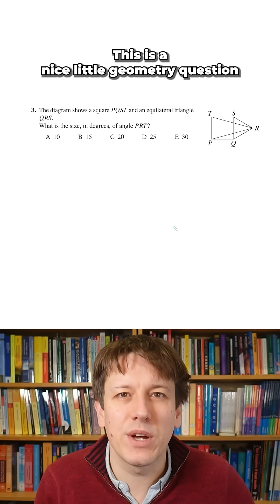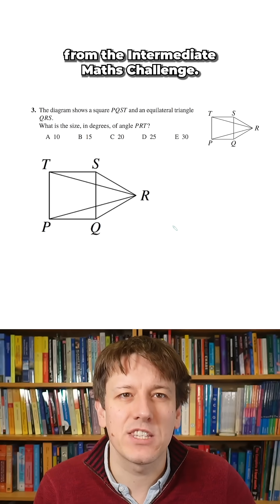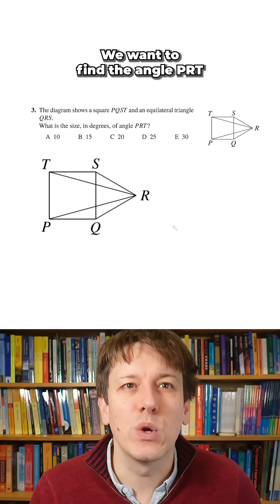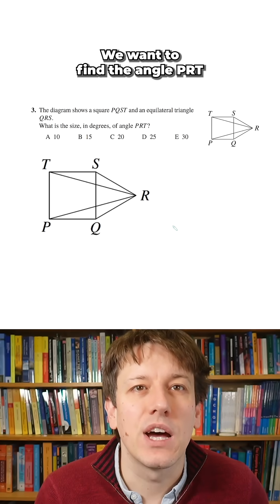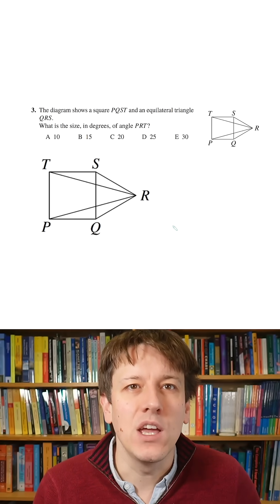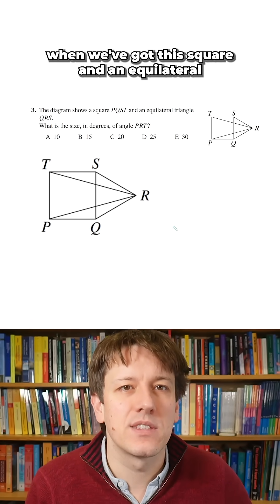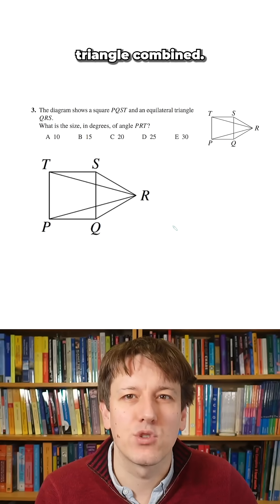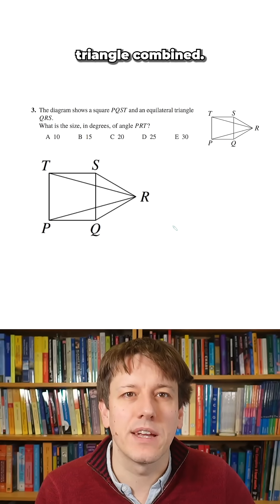This is a nice little geometry question from the Intermediate Maths Challenge. Let's make the diagram a bit bigger. We want to find the angle PRT when we've got this square and an equilateral triangle combined.